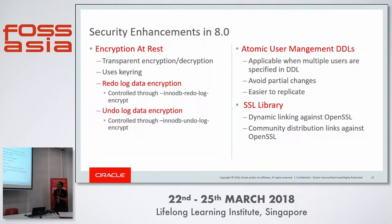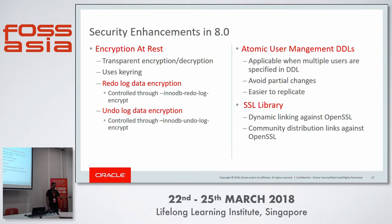In 8.0 we introduced two system variables that control the encryption of redo and undo logs. In 5.7 we added support for user table encryption, and now we extend it. This is transparent — the user doesn't need to do anything. Keys are generated automatically and stored in the keyring. All you need to do is configure the server to use a keyring plugin, and the server manages everything else on its own.